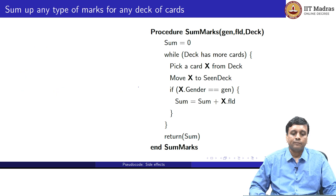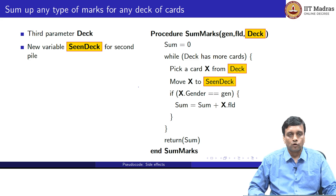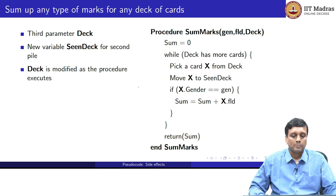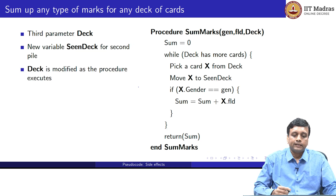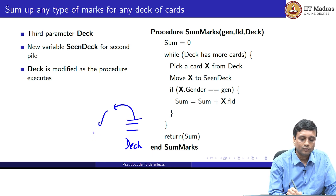The deck of cards now becomes a third parameter. Instead of pile 1 and pile 2, we have to have another value which accounts for what we call pile 2. We have a deck of cards which we are processing — the deck in which we start looking for values — and the deck of cards which we have finished processing, pile 2, which we will call the scene deck. Cards are taken from this original deck and one by one we put them into the scene deck.